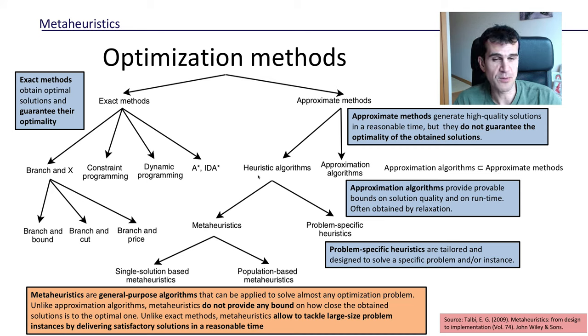We also have heuristic algorithms. Heuristic algorithms do not provide the optimum for sure, and they do not even provide any kind of theoretical bound. Within heuristic algorithms, we've got problem-specific heuristics, which are designed to solve specific problems, and then we've got at last the metaheuristics, which are general purpose algorithms that are not specific to any particular problem. They can be used in principle for any problem. As we've seen, they do not guarantee the optimum at all. They do not provide any theoretical bound on how close we may get to the optimum, but they usually provide good solutions in a reasonable amount of time.